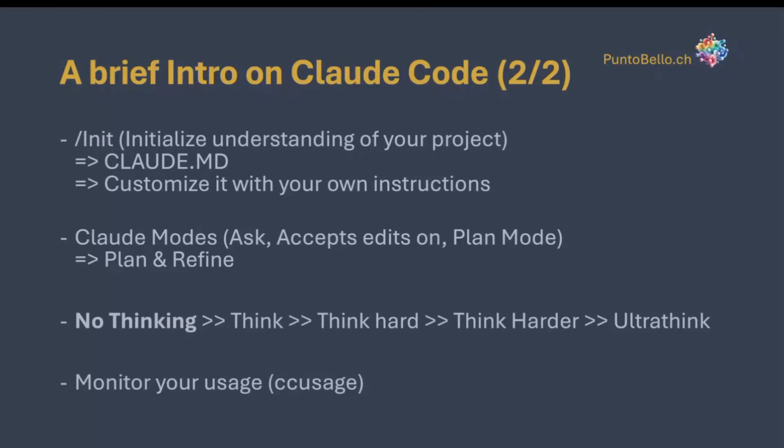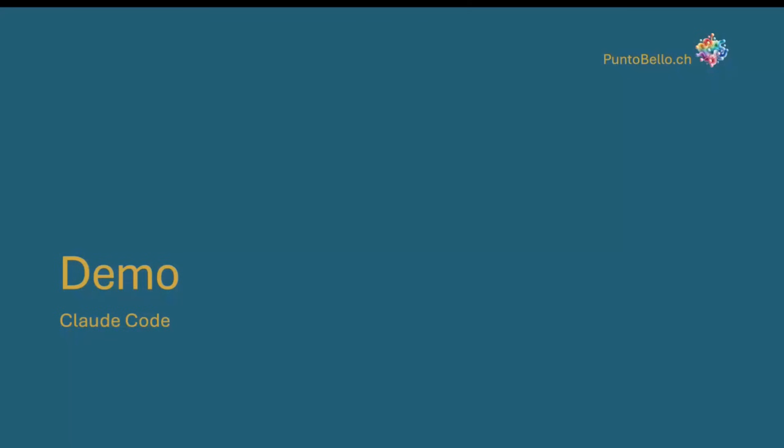There are four stages of thinking which use tokens — a lot of tokens when you use, for example, extended think. You can monitor your usage with a tool called CCU Usage, which I will show in the demo.